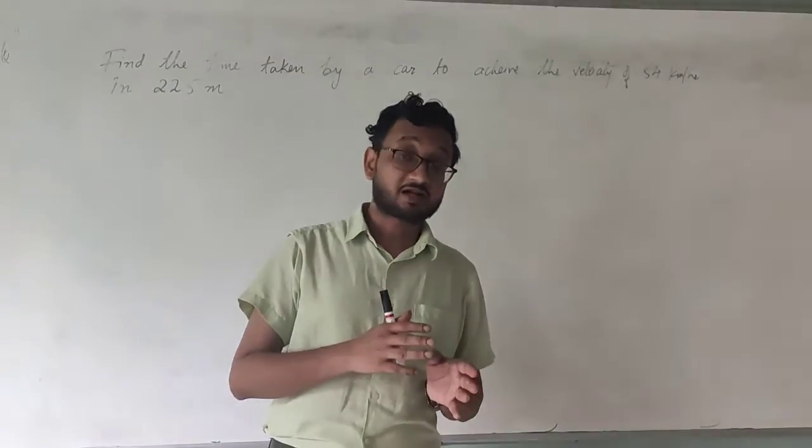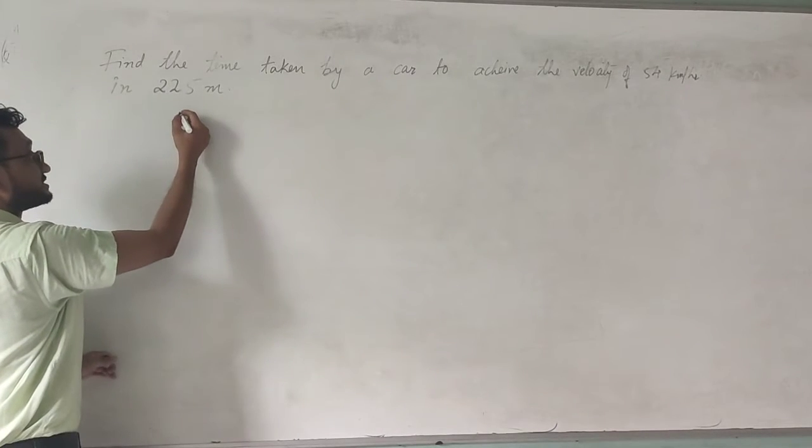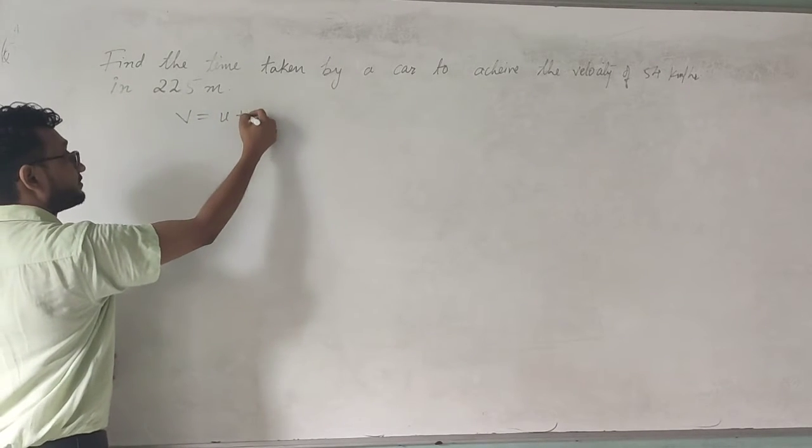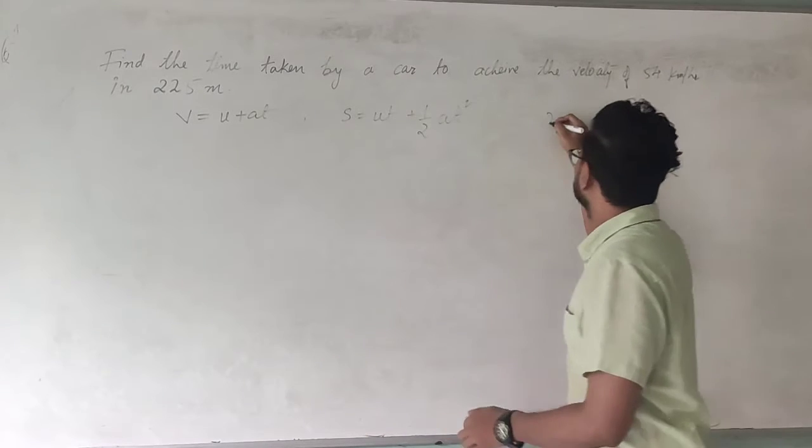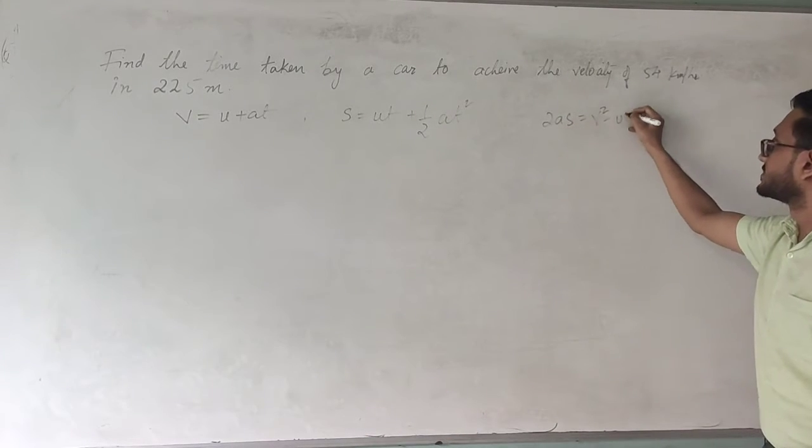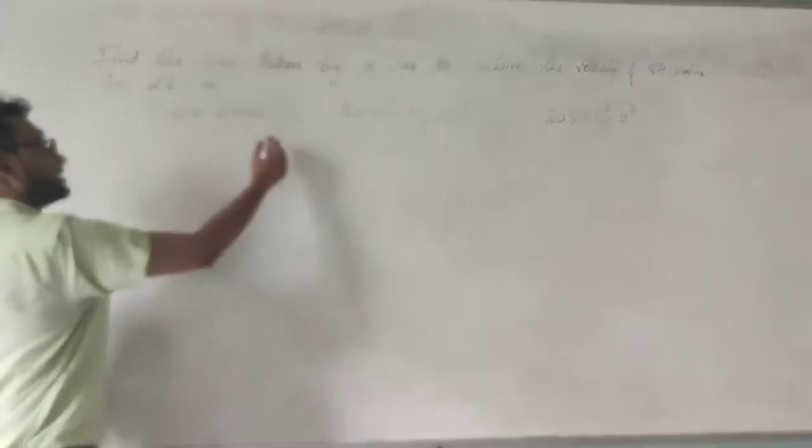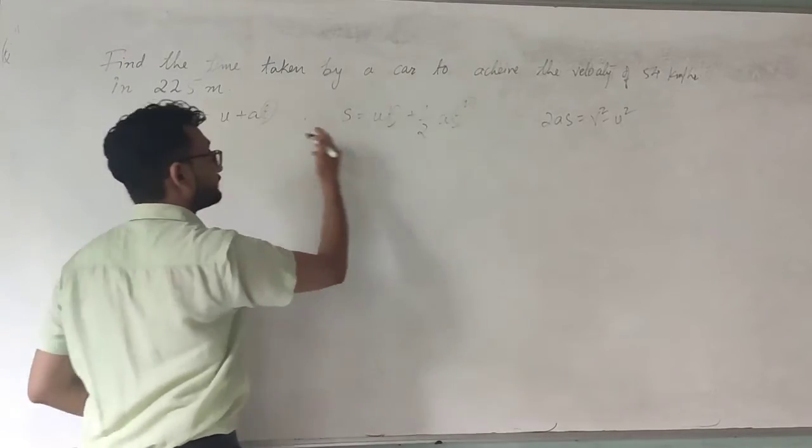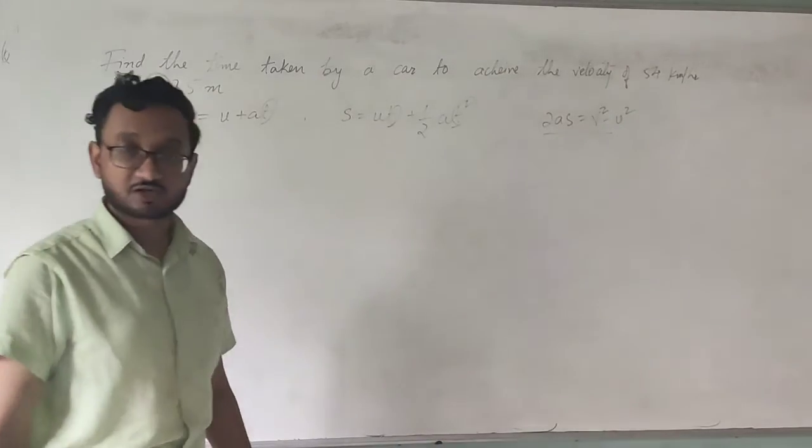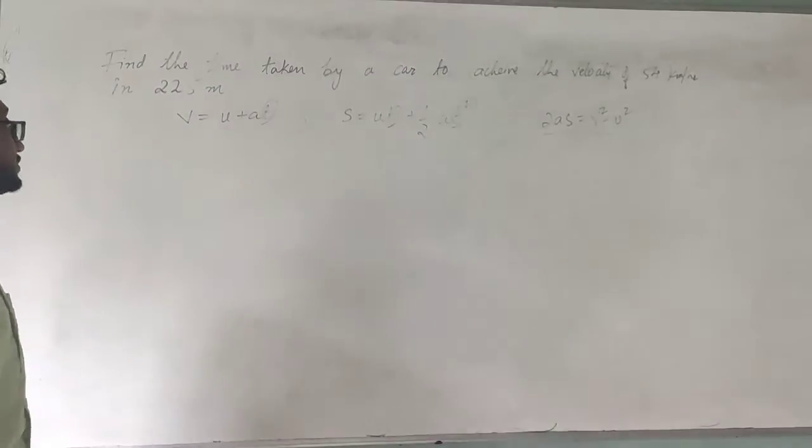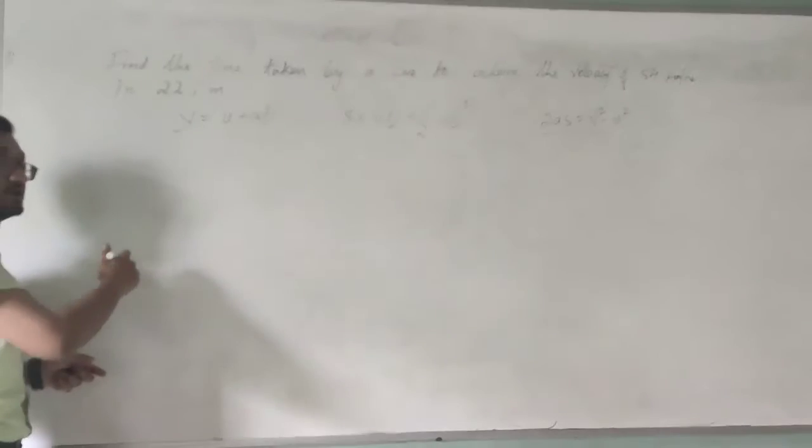And how will you do that? By applying the second equation or the third equation. But in this case you are supposed to find the time. So let's say that you can find the acceleration with the help of the third equation. You will have to use the third equation in order to find the acceleration first, and after finding the acceleration you can apply this formula to find the time.